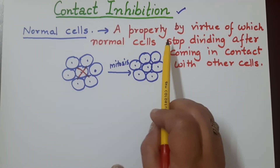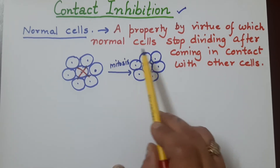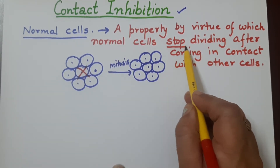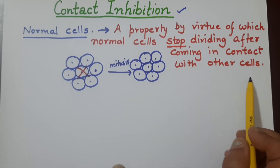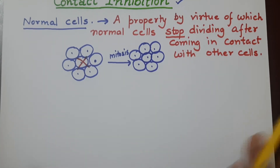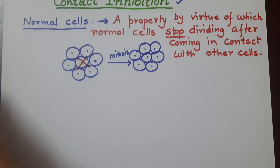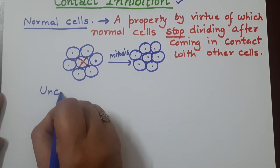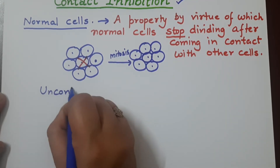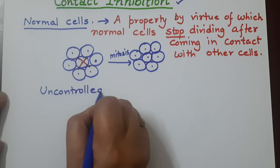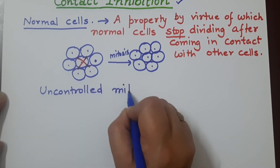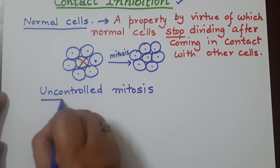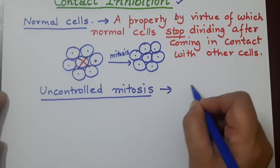So contact inhibition is a property by virtue of which normal cells stop dividing after coming in contact with other cells. You know that cancer is uncontrolled mitosis — cancer is uncontrolled cell division.